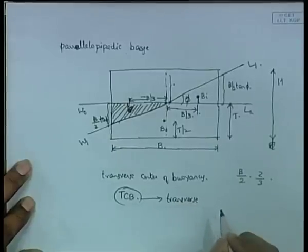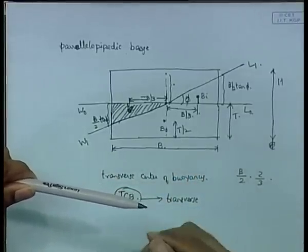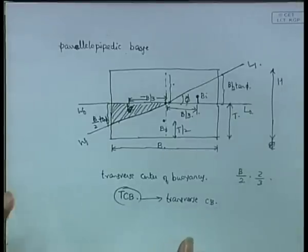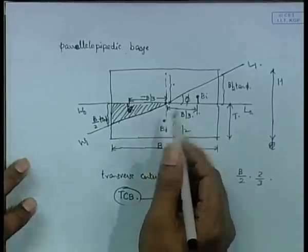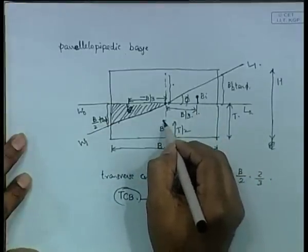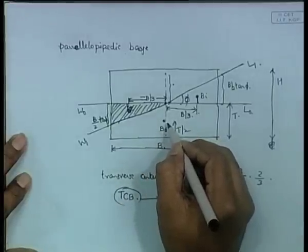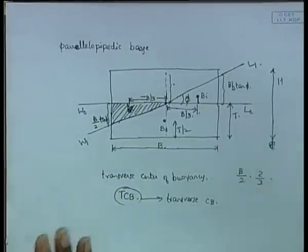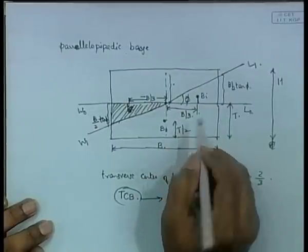TCB is a y-coordinate, the transverse direction. When the ship is not inclined, its center of buoyancy B0 is exactly at the vertical middle, so TCB equals 0. When the ship heels, B0 shifts transversely. The problem asks: what is the horizontal (transverse) distance and the vertical distance of the new B0 from the keel?